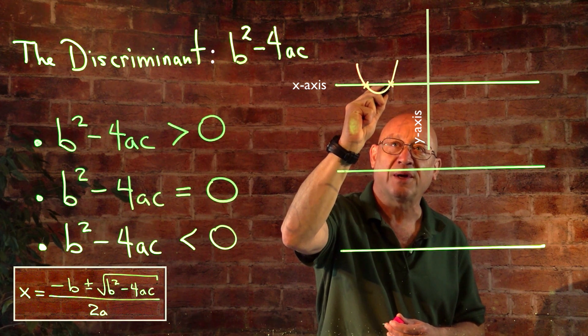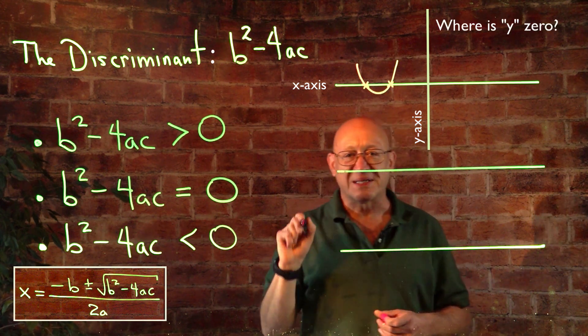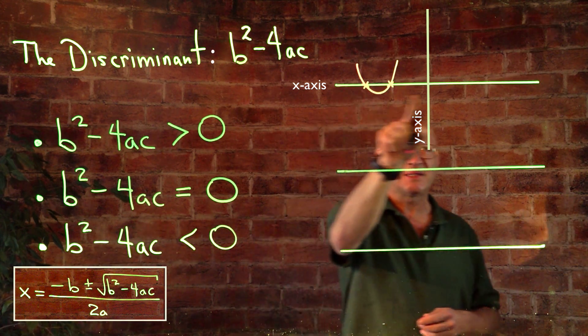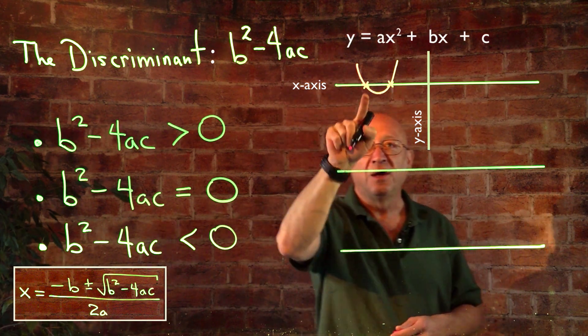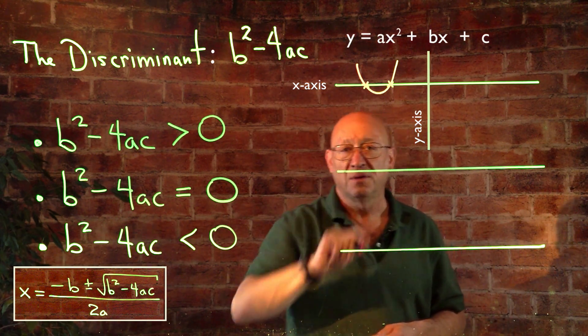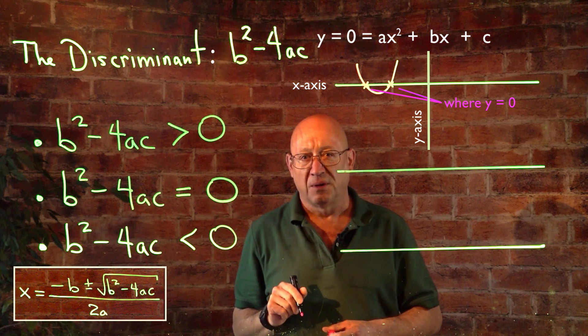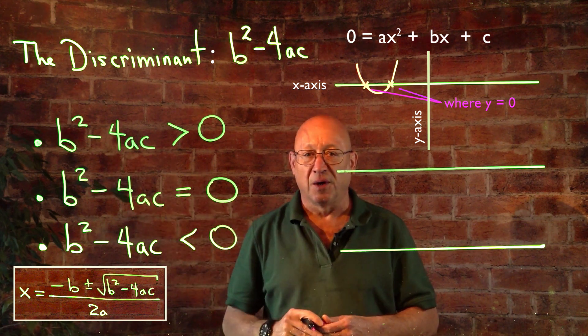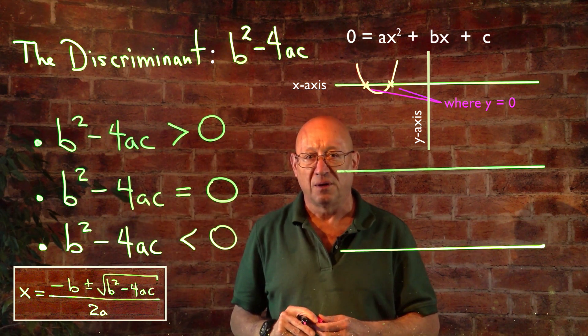Remember, what's the quadratic equation asking? Where is that zero? This is the x-axis, we have y equals the function, here are the two points where that equals zero. And that's the situation where your b squared minus 4ac is positive.